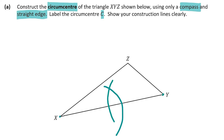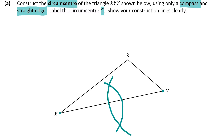You might get something like this. Now get your ruler and find the perpendicular bisector by passing it through the two intersection points of the arcs. That is your perpendicular bisector.